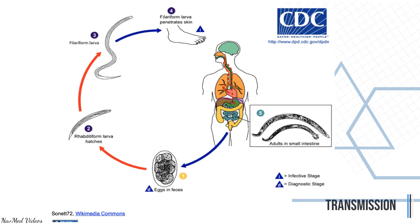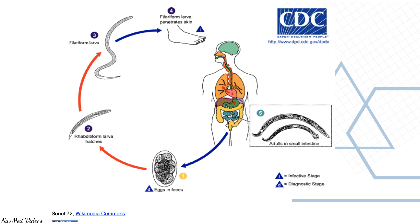This is how the hookworm cycle looks like. You can see that the eggs are laid in the faeces. These eggs hatch into rhabditiform larvae, which convert into filariform larvae in stage three. The filariform larvae penetrate the skin of humans in stage four.